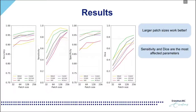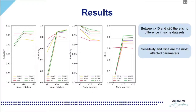If we observe the metrics as a function of patch size in individual datasets, it is clear that larger patch sizes work better in our model. Sensitivity and DICE are the parameters that benefit the most. If we observe the metrics as a function of the number of patches acquired per image, we can see that while a minimum number of patches is required, there is a point where little improvement can be seen. Again, sensitivity and DICE benefit the most from a sufficient number of patches.